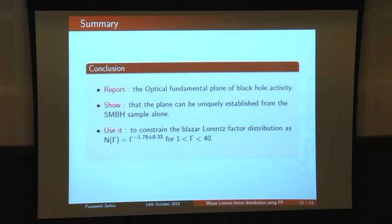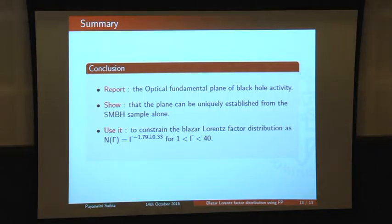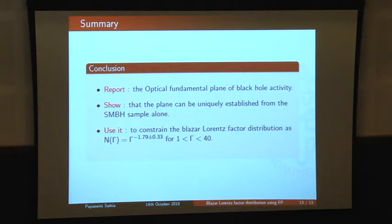To summarize: we report the optical fundamental plane of black hole activity using the OIII line emission. We show this plane can be uniquely established using just the low-luminosity AGN sample. Finally, we can use it to constrain the blazar Lorentz factor distribution. For the VIPS sample, for a gamma range of 1 to 40, we constrain it to a power law of minus 1.8 plus or minus 0.3. Further work will use other samples with available black hole masses to constrain it further. Thank you.